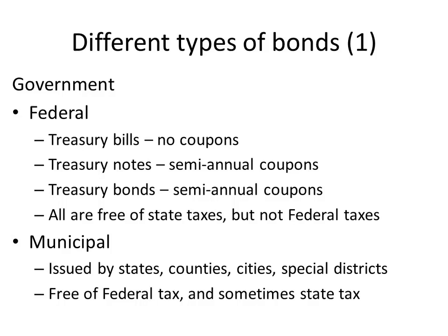U.S. Treasury debt coupon payments are free of state taxes but not federal tax — the U.S. government says states can't tax these coupons, but reserves the right to tax them itself. Municipal debt is pretty much the opposite: it is free of federal tax, and if you live in the same state where the bonds are issued, usually free of state tax as well. For instance, as a Missouri resident, if I buy a municipal bond issued in Missouri I pay neither federal nor state tax. But if I were an Arkansas resident buying the same bond, I'd likely have to pay Arkansas state income tax on the coupons.